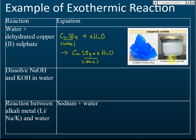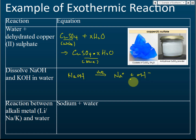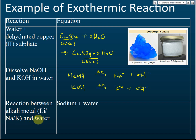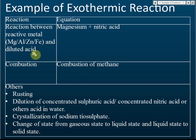When you dissolve sodium hydroxide or potassium hydroxide powder in water, they form Na⁺ and OH⁻ ions, and heat energy is released — you can feel the test tube become warmer. Reactions between alkali metals like lithium, sodium, or potassium with water also release heat energy. Reactions between reactive metals and dilute acid, such as magnesium with nitric acid, are also exothermic. All combustion reactions are exothermic because combustion releases a lot of heat energy.